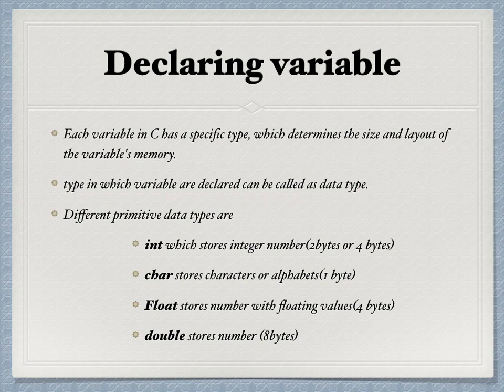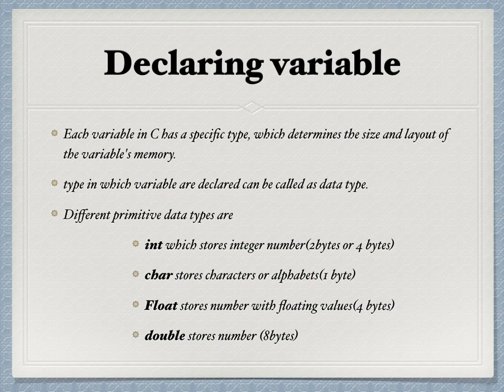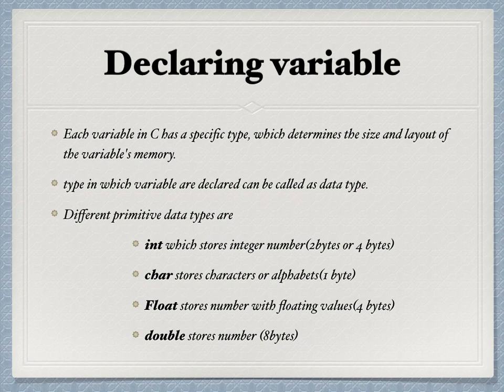Now we are going to study how memory is allocated for variables. Each and every variable that you give in a program has a specific type. Type means what kind of value you are going to store inside that variable — whether it is an integer number, a decimal number, or a character. Each and every type that you give in that variable needs different memory sizes.